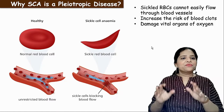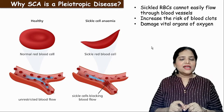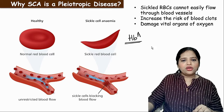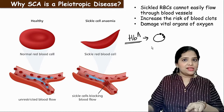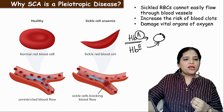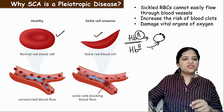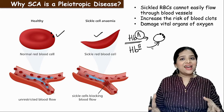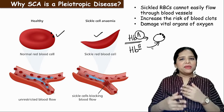Why do we call sickle cell anemia a pleiotropic disease? The gene HBA codes for two things: one is the shape of the RBC, and the other is the hemoglobin beta globin. If there is any defect in this gene — when it becomes HBS instead of HBA — both these things get disturbed. The shape of the RBC changes from normal discoid to crescent shape, and the hemoglobin on the surface of the RBC becomes defective, so it cannot carry enough oxygen.